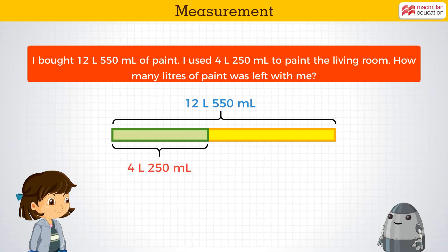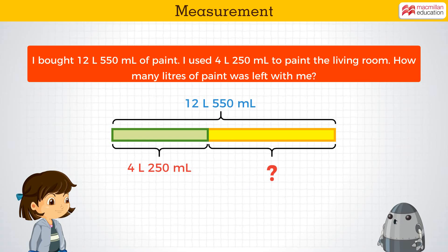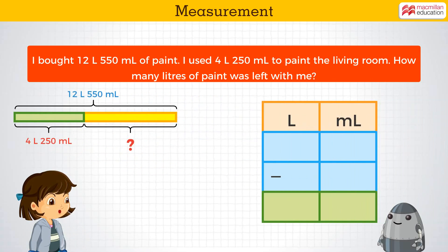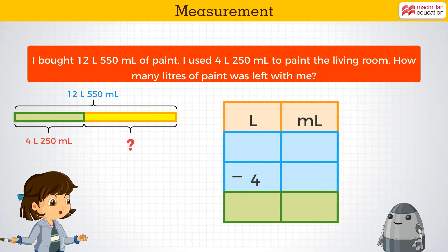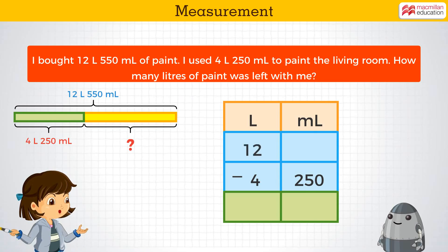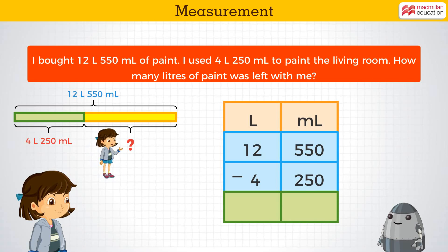Yes! And the remaining yellow portion shows the liters of paint left with you. Right, Jasleen? Absolutely correct, Robo! So we need to subtract 4 liters and 250 ml from 12 liters 550 ml to find the answer.